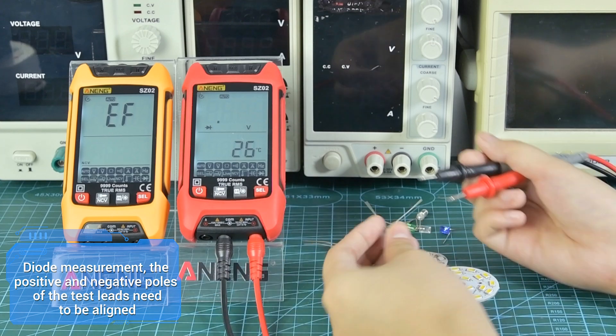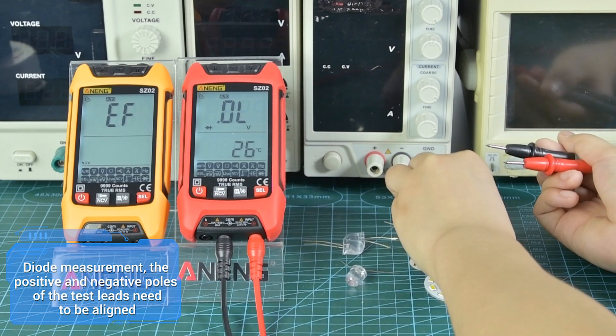For diode measurement, the positive and negative poles of the test leads need to be properly aligned.